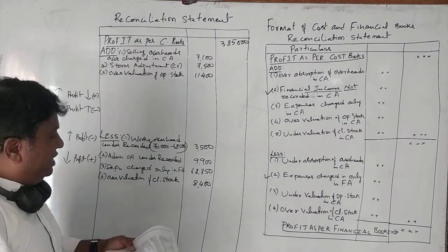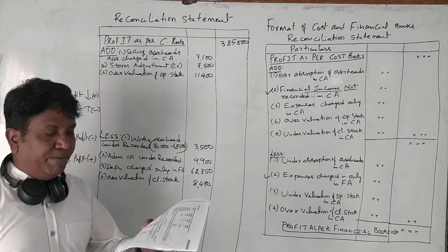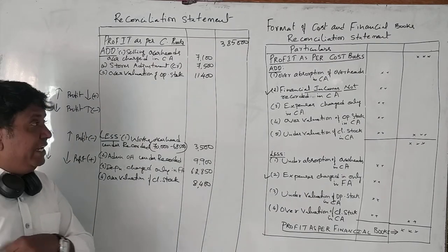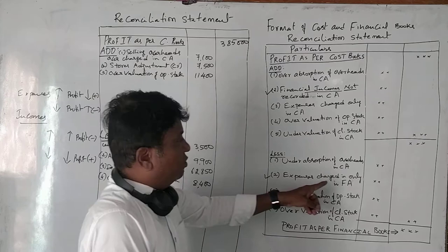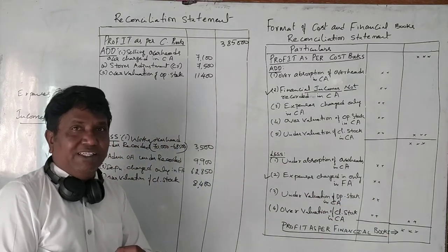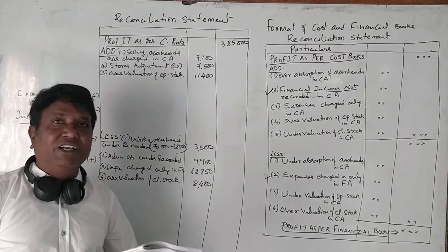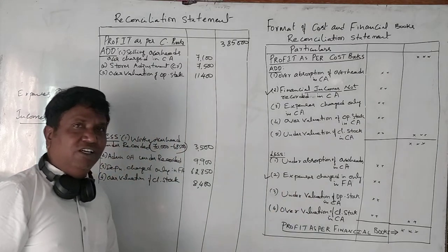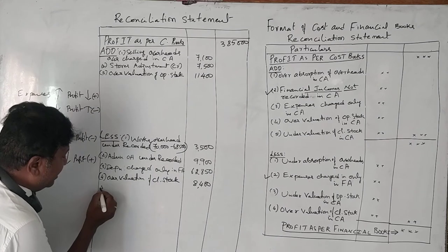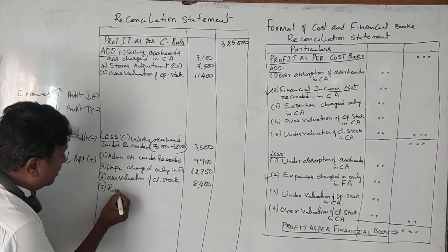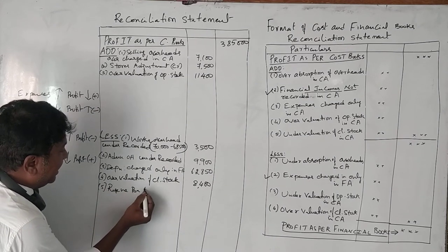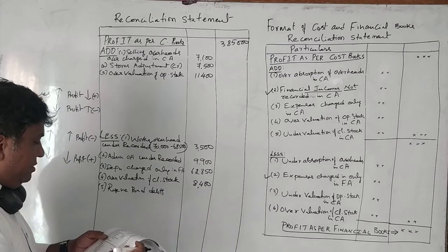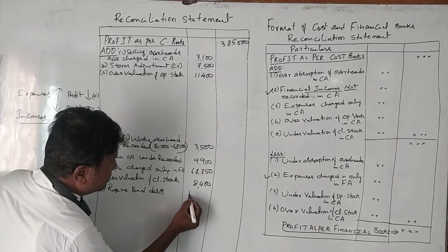Next is reserve for bad debts. As I explained, expenses charged only in financial accounting — such as reserve for bad debts and reserve for taxation — are shown only in financial accounting. So we deduct it here. Reserve for bad debts: 16,050 rupees to be deducted.